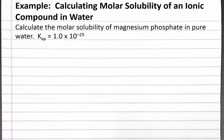In this example problem, we calculate the molar solubility of an ionic compound in water. The problem reads: calculate the molar solubility of magnesium phosphate in pure water. The solubility product constant for magnesium phosphate is 1.0 times 10 to the negative 25th.